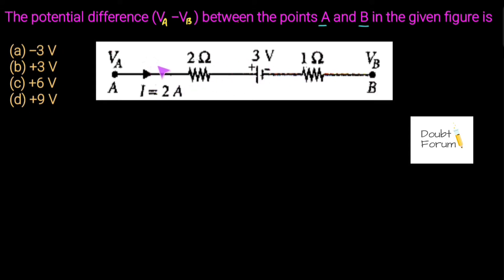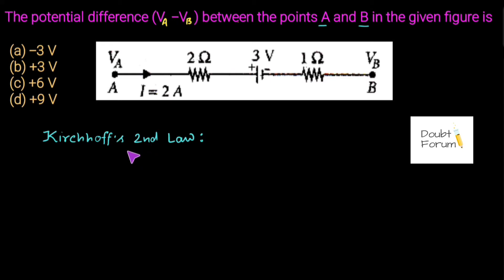This question is based on Kirchhoff's Second Law, also known as Kirchhoff's Voltage Law. According to this law, the algebraic sum of all the voltage drops in any closed circuit is equal to zero. We have to take the algebraic sum of voltage drops across each and every component connected in a closed loop. To understand it better, let me create a circuit.